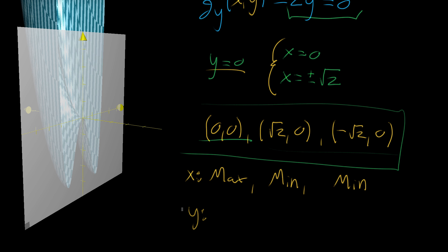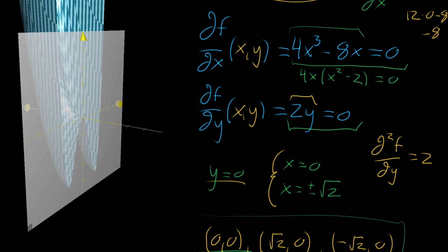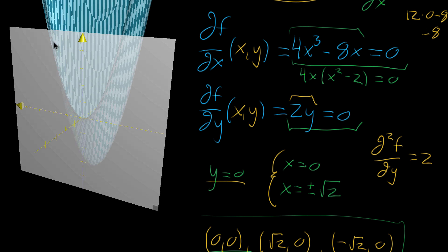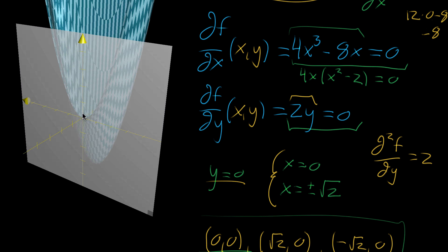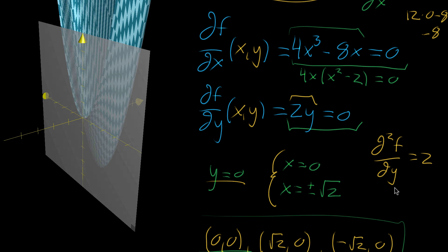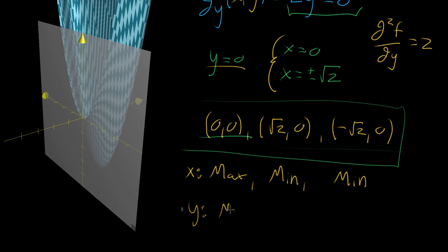Now for the variable y: if we take the second partial derivative with respect to y, we're taking the derivative of 2y with respect to y, and that's just the constant 2. Because it's positive, it's telling us that as far as y is concerned, there's positive concavity everywhere. If you slice with a constant x value to see pure movement in the y direction, you always get positive concavity. So as far as y is concerned, all three points look like local minima.